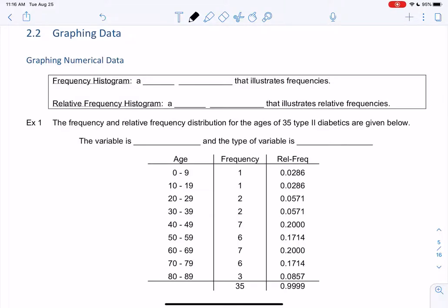All right, another way to organize data is to graph it. We see graphs all the time, so let's talk about some common graphs in this chapter. Let's start with graphing numerical data first. We can create these things called histograms.